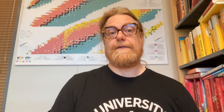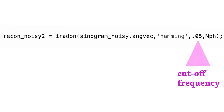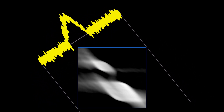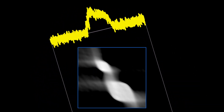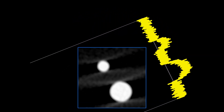One way to reduce the effect of noise is modifying the filter in FBP. We can add another argument to IRADON, setting frequency content to zero above the specified cutoff frequency. The frequency-limited reconstruction is not noisy anymore, but it is a bit blurred, which is a natural consequence of the low-pass filter we applied.